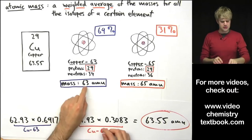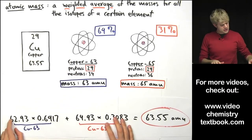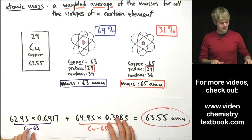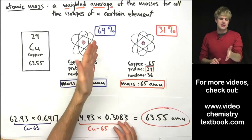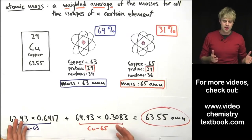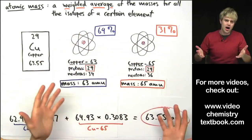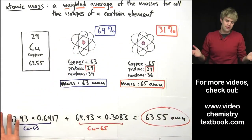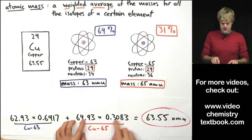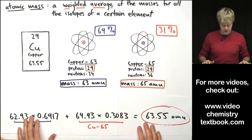It turns out that copper-63 doesn't really weigh exactly 63 AMU but it's actually 62.93. It's also not 69% abundant but it's 69.17% abundant. So, there are just some extra decimals on the end that I chose to leave off for these calculations because they're kind of a pain. The same is true of copper-65 where the numbers aren't the perfectly nice even ones that I used for this problem.